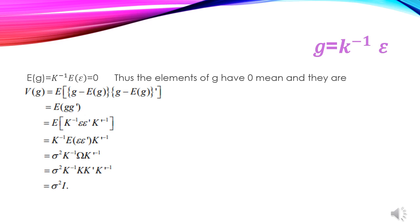The variance of g is computed as the expectation of K⁻¹ε ε' K⁻¹', which equals K⁻¹ times expectation of εε' times K⁻¹'. Since expectation of εε' equals sigma squared times Ω, we can substitute accordingly.